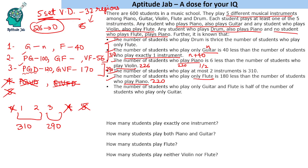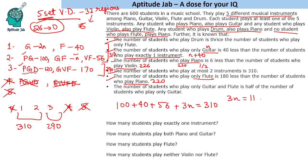Adding all one- and two-instrument values: 100 plus 40 plus 56 plus 3N equals 310. So 3N equals 114, giving N equals 38. Therefore guitar-flute is 38 and only guitar is 76. This completes all values for every valid instrument combination. We can now answer all the questions about student counts.